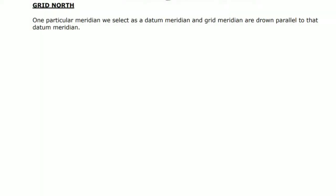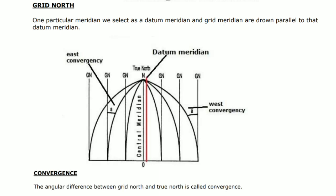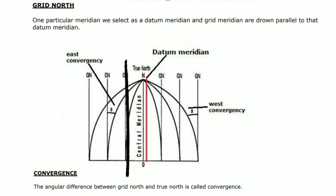Grid North: one particular meridian is selected as a datum meridian, and grid meridians are drawn parallel to that datum meridian — that is called grid north. You can see in the diagram the red line drawn parallel to one meridian, which is called the datum meridian, or we can say grid north.